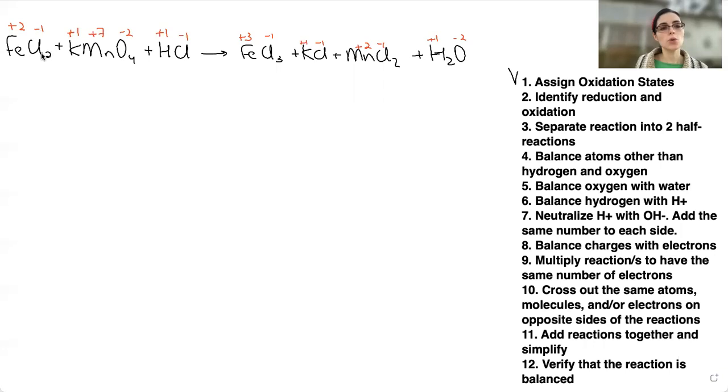If we look at chlorine, chlorine has an oxidation state of negative one here on the reactant side. On the product side, chlorine also has an oxidation state of negative one. So there was no change there. But if we look at iron, iron has an oxidation state of plus two on this side and of plus three on the other side. So oxidation state of iron increased.